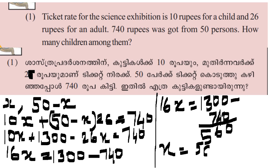16x equals 560. 560 divided by 16 — if you do it, the answer is 35. So x equals 35. There are 35 children. The remaining 50 minus 35 equals 15 adults.